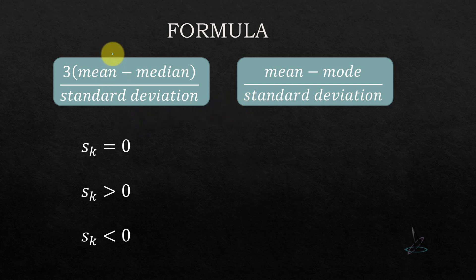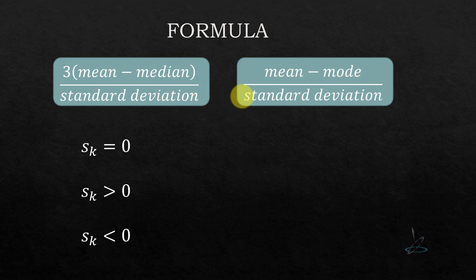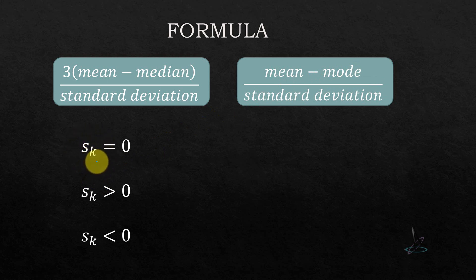Both formulas will give the same result — if one gives a positive number, so will the other; if one is negative, the other is also negative. You can choose either one; normally the question will guide you whether to use mean and median or mean and mode, so choose carefully. SK stands for Pearson coefficient of skewness.